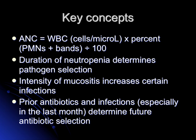When we see a patient at Moffitt, we like to go back at least a year to see the organisms that the patient has cultured in different areas — sputum, urine, and blood. Because in this population, these bacteria usually come back. Remember: on these patients, their enemy is their own flora.